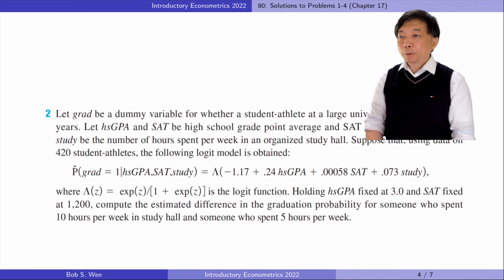Let's do problem two. Let grad be a dummy variable for whether a student athlete at a large university graduates in five years. Let hsGPA and SAT be high school grade point average and SAT score respectively. Let study be the number of hours spent per week in an organized study hall. Suppose that using data on 420 student athletes, the following logit model is obtained.